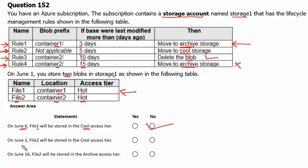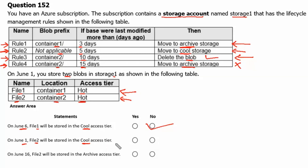Statement 2: On June 11th, file 2 will be stored in cool access tier — yes or no? File 2 is a member of container 2, where rule 3 and rule 2 both apply. On June 1st it is added to the hot access tier, and none of the rules will be triggered by then. So the answer is no.